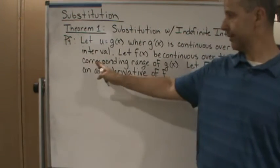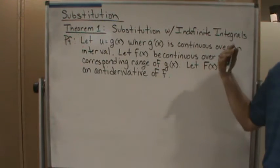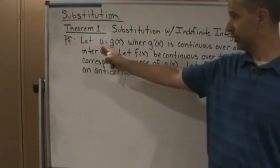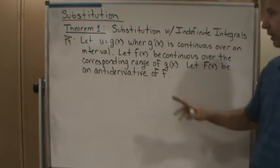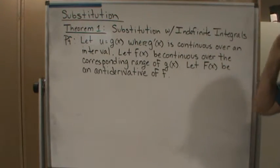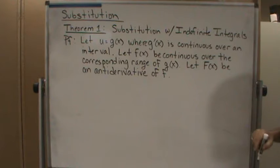So now, all I did was I first set up the same assumption. We're going to start with letting u equal g of x, where g prime of x is continuous over an interval, let f of x be continuous over the corresponding range of g, and then also we're going to let capital F of x be the antiderivative of f.